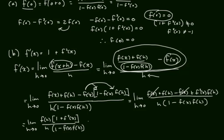So now, we want to say the limit of a product is product of limits. So the limit as h goes to 0, f of h over h times the limit as h goes to 0, of 1 plus f squared x, like that, over 1 minus f of x f of h, like that.